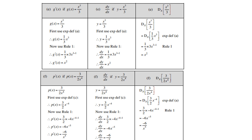For example e, we have a fraction x cubed over 3. We need to change that, because derivatives don't tolerate fractions. The coefficient will become one-third x to the power of 3. Therefore, 3 times one-third is 1, and 3 minus 1 is 2, so the answer is x squared. For example f, we have 3 over 2x to the power of 4. The coefficient is 3 over 2, and x to the power of 4 moves to the numerator becoming x to the power of negative 4. Therefore, negative 4 times 3 over 2 is negative 6, and negative 4 minus 1 is negative 5.